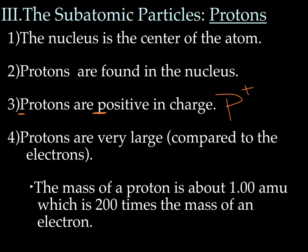Protons are also very large — now that probably sounds a little weird because how could protons be large when atoms are small. What I mean is they are large compared to the size of electrons. In reality they're tiny, but if you lived in atom world and were the size of an atom, protons would be really big. Their mass is about 1 AMU, which is 200 times greater than the mass of an electron.